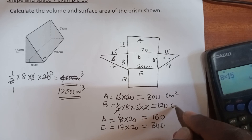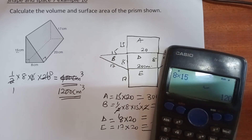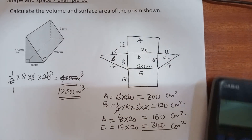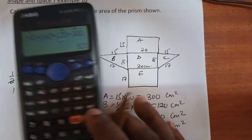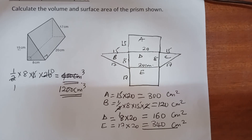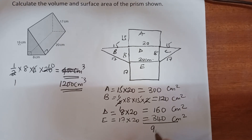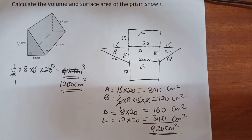All areas are in centimeters squared. The total surface area of the prism is the sum of all the faces: 340 plus 160 plus 120 plus 300, which equals 920 centimeters squared. So the surface area of the whole figure is 920 centimeters squared. Thank you, and see you later in a different question.